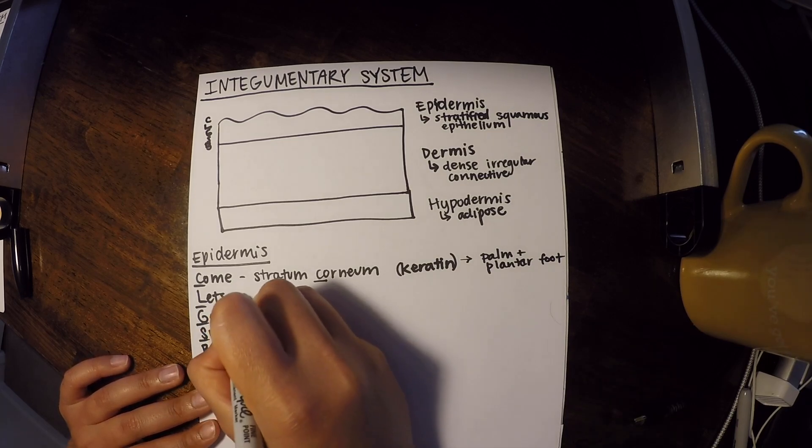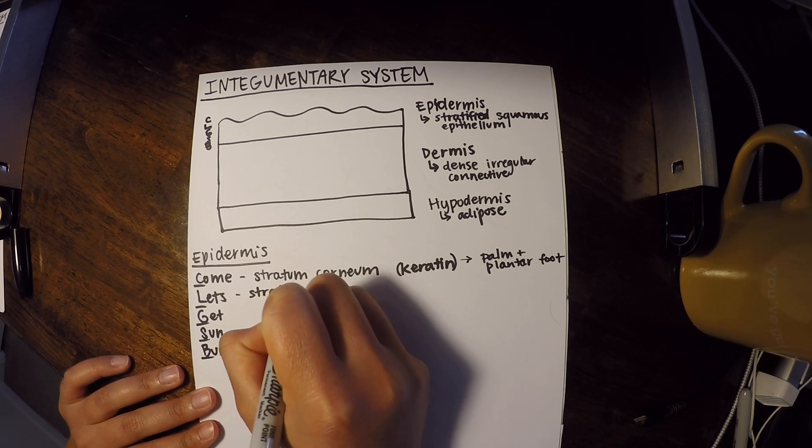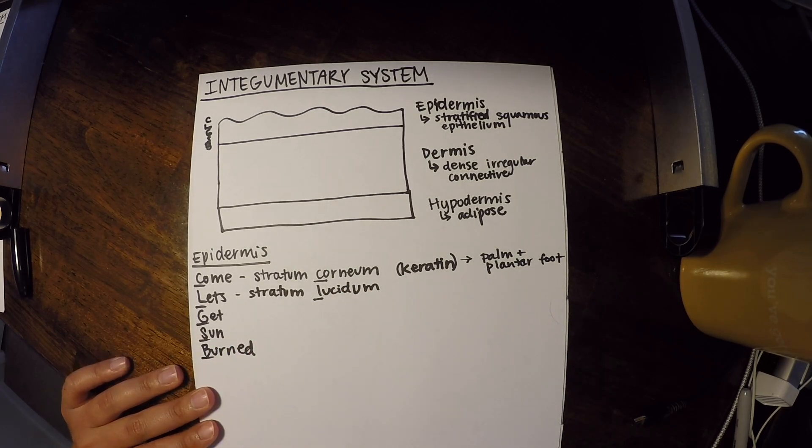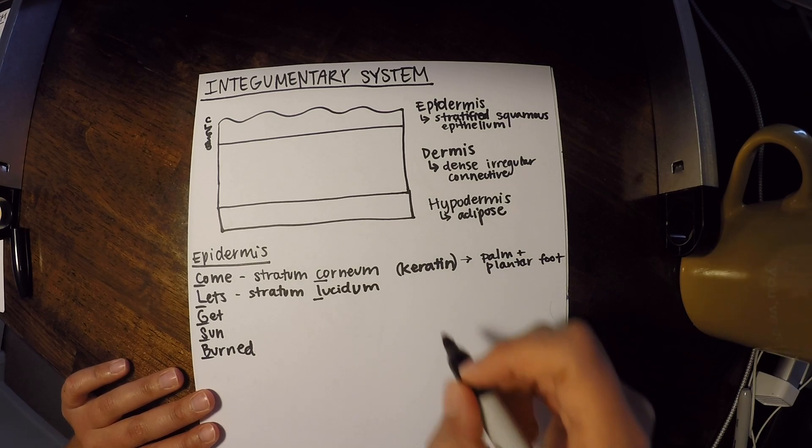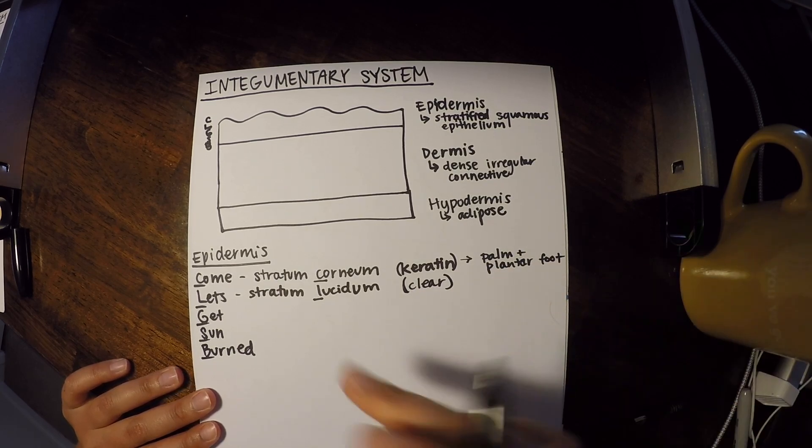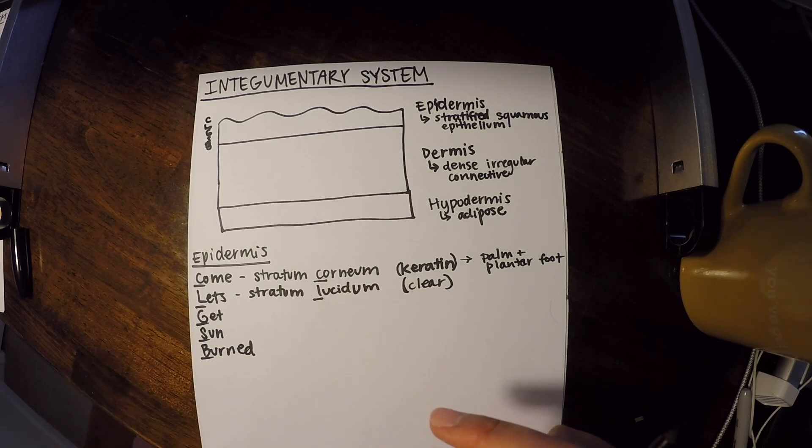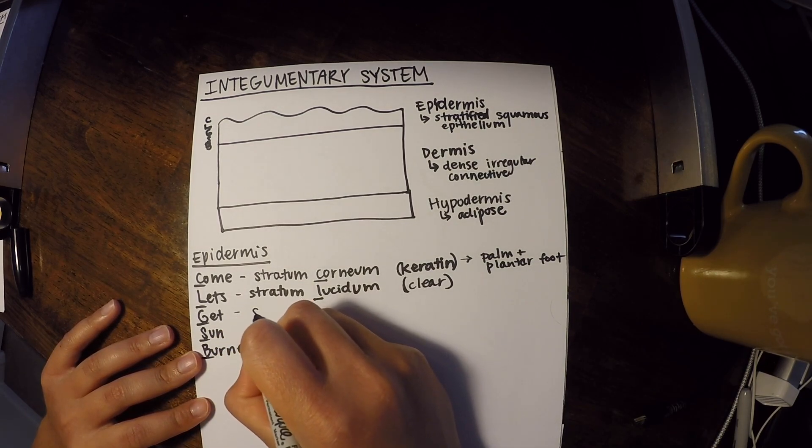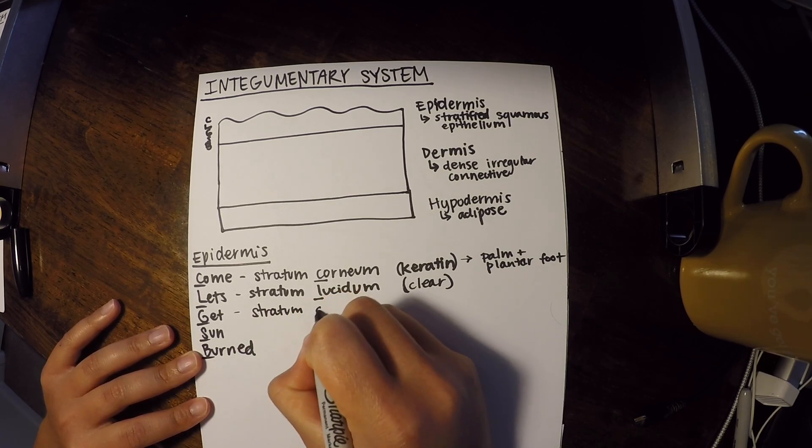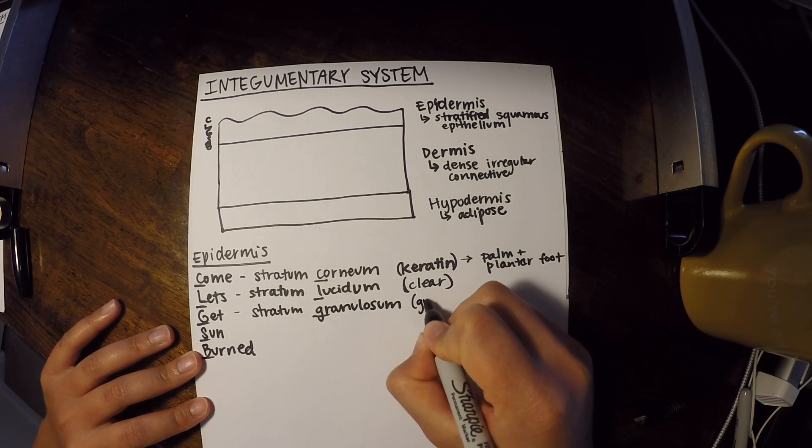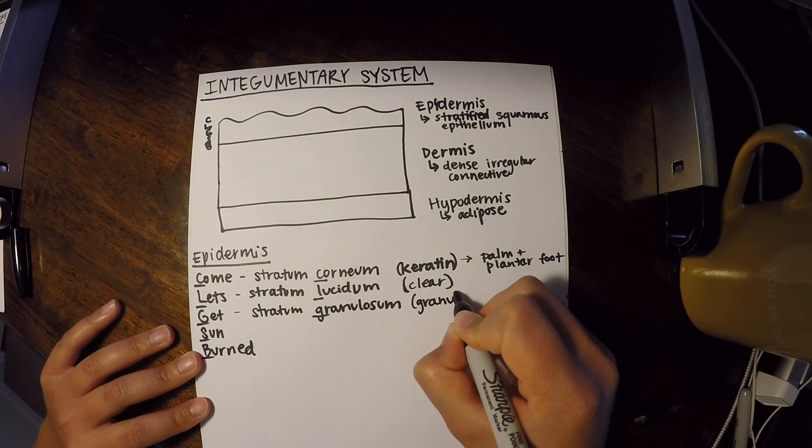So that's our most superficial layer, only in those areas. Our next layer is stratum lucidum. So that's what the L represents. And it's different than the others because it's actually clear. And so lucid is another way of saying clear. And that's why we can kind of remember that this is our clear layer because it looks like the word lucid. The next deepest layer is stratum granulosum. And that's granulated, just like the word sounds like. Or granular.